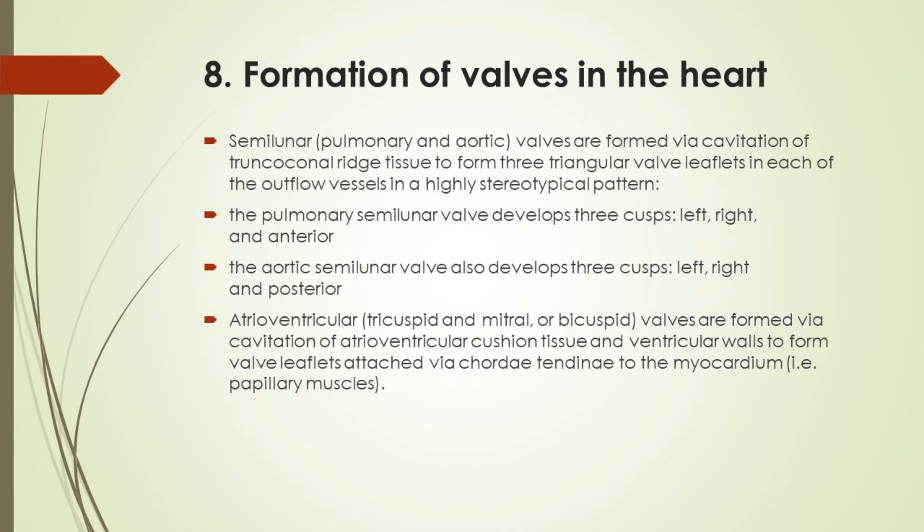Formation of valves in the heart: Semilunar — pulmonary and aortic — valves are formed via cavitation of truncoconal ridge tissue to form three triangular valve leaflets in each of the outflow vessels in a highly stereotypical pattern. The pulmonary semilunar valve develops three cusps: left, right, and anterior. Atrioventricular — tricuspid and mitral (or bicuspid) — valves are formed via cavitation of atrioventricular cushion tissue and ventricular walls to form valve leaflets attached via chordae tendineae to the myocardium, i.e., papillary muscles.